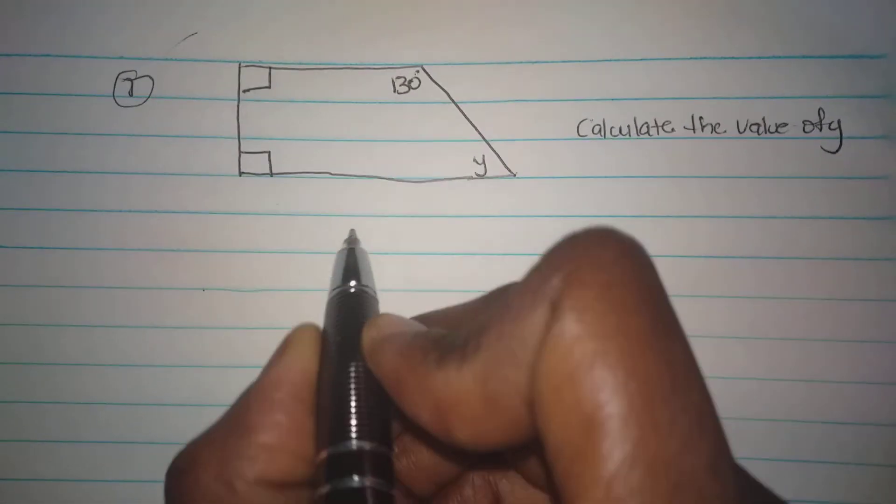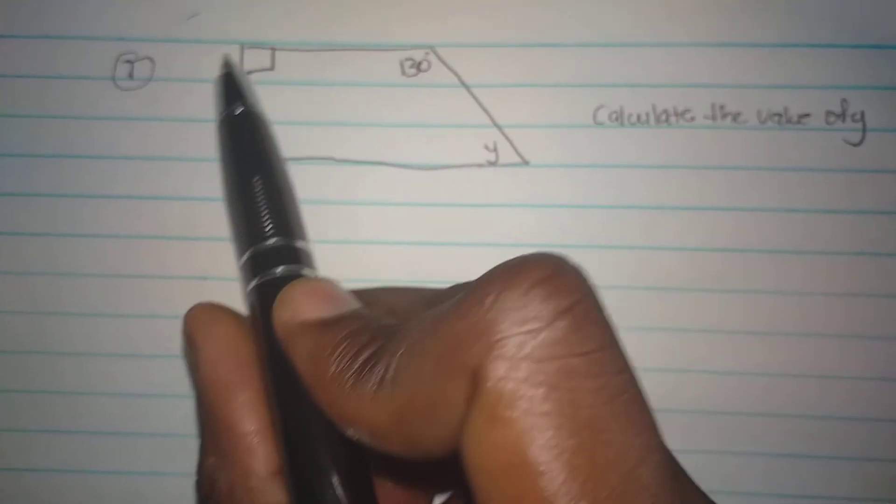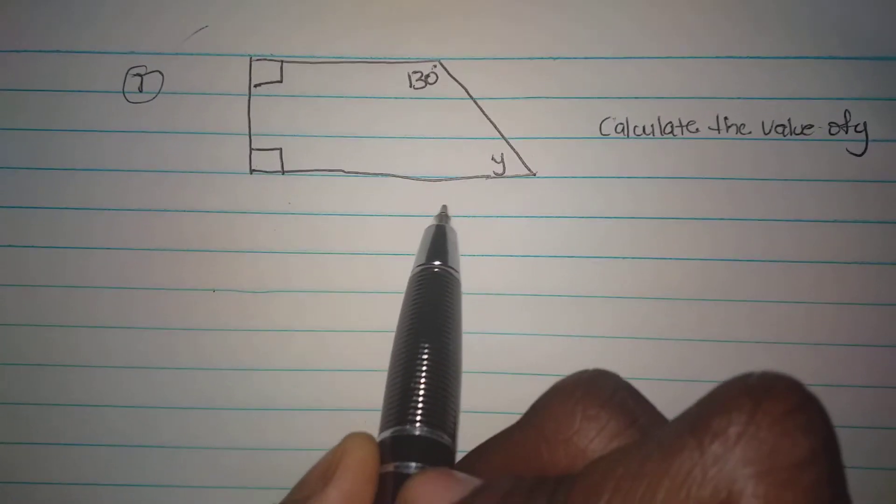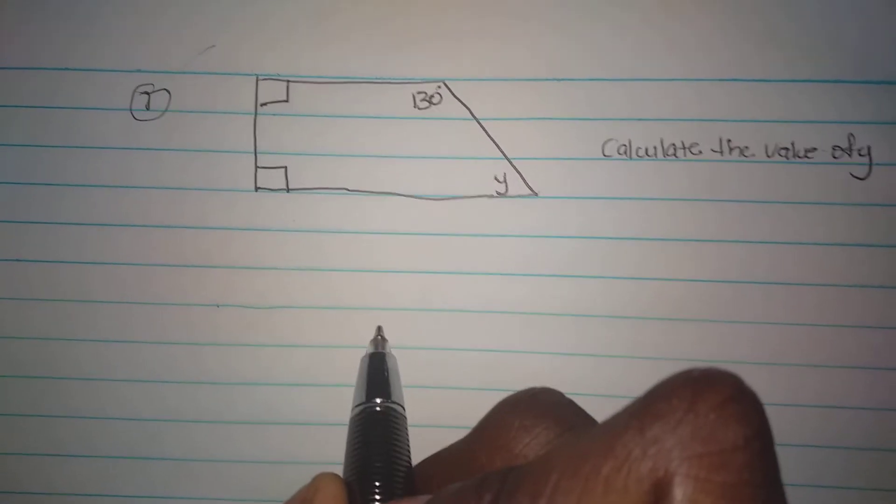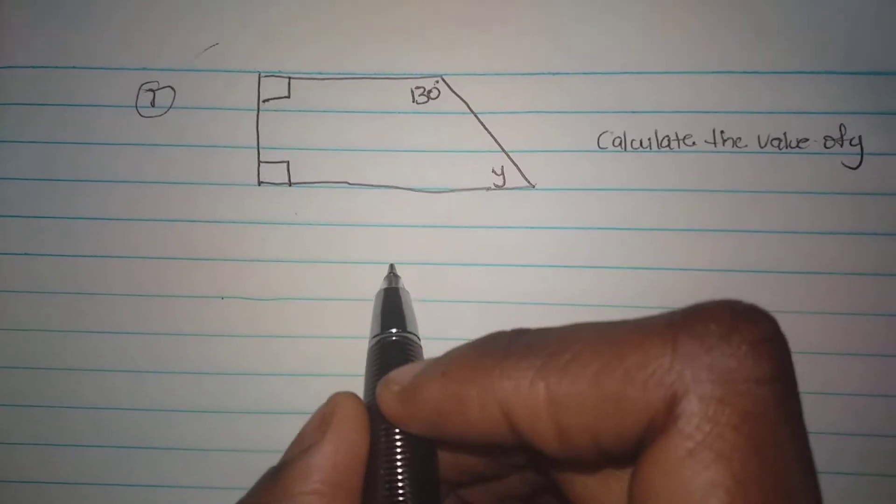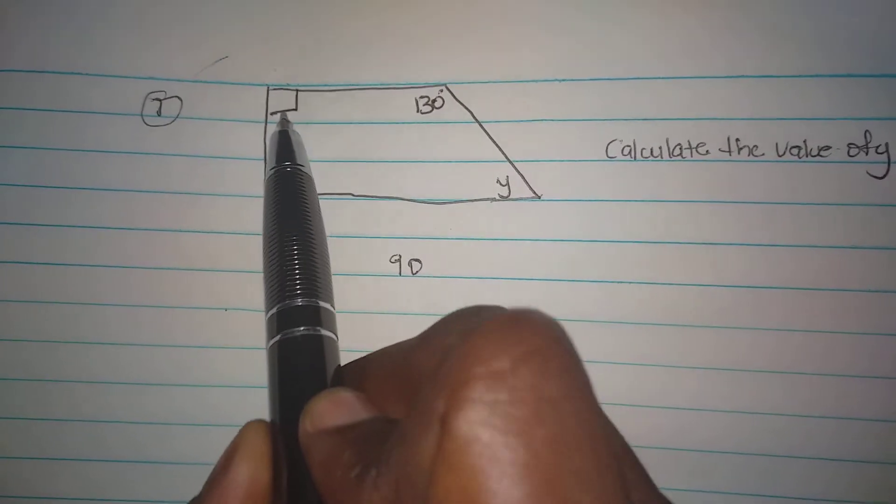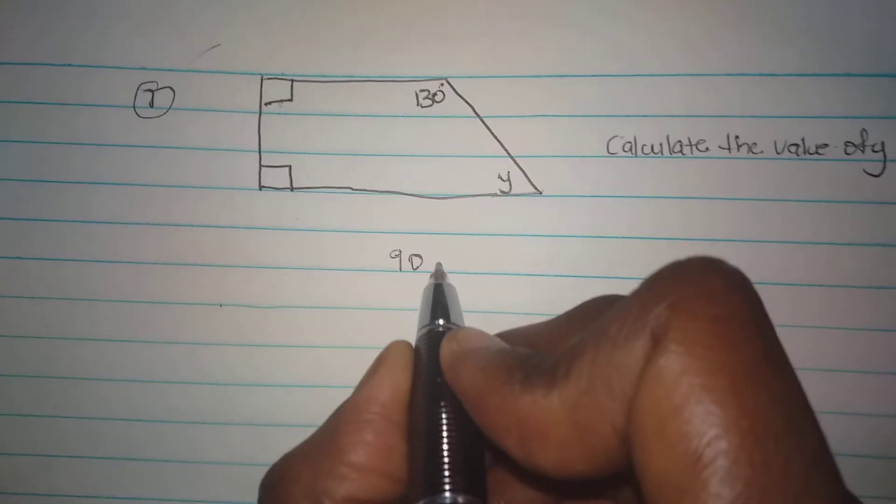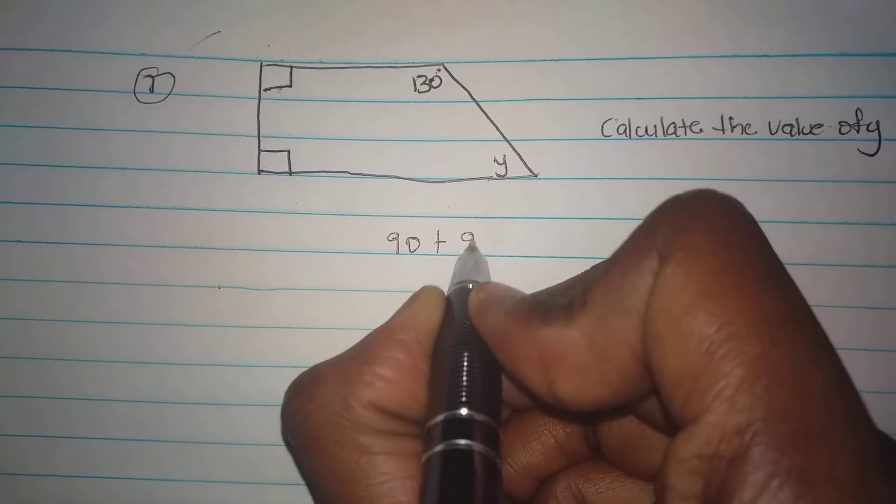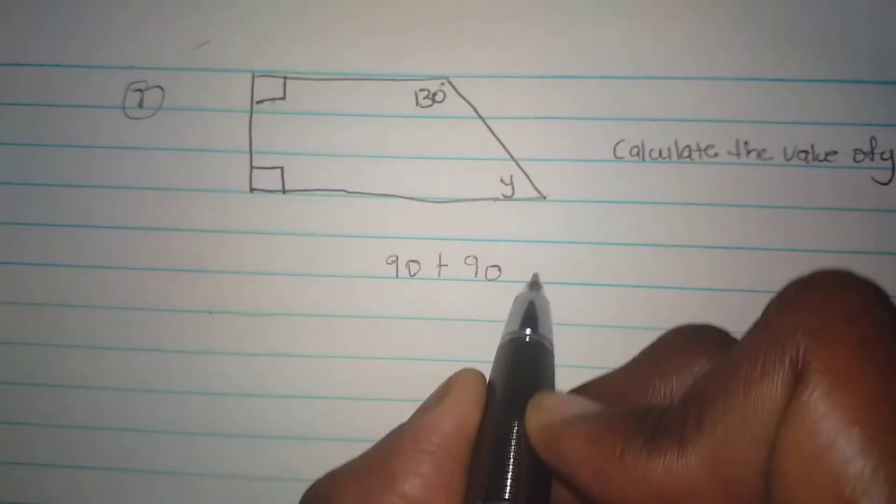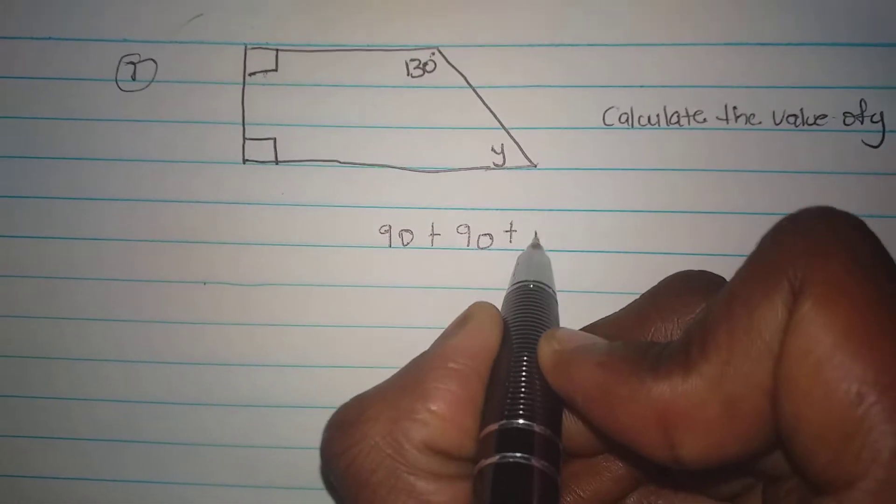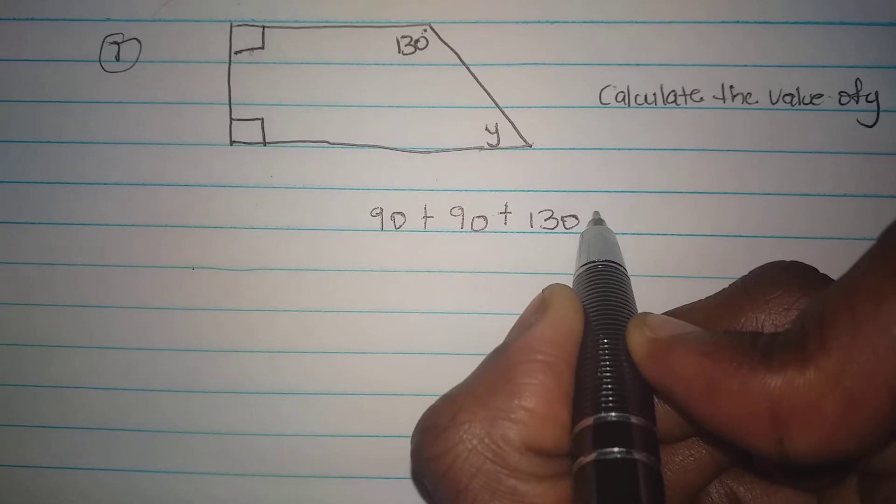So all that I'm going to be doing is adding all the angles inside of this trapezium and equating it to 360 degrees. So 90 represented by this box, plus 90 represented by this one, plus 130, plus y must give me 360 degrees.